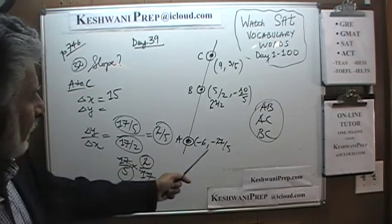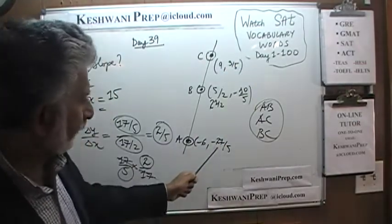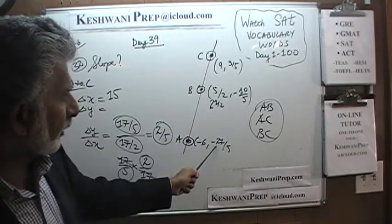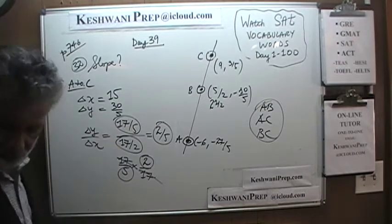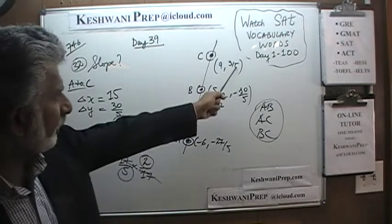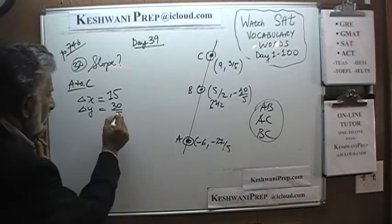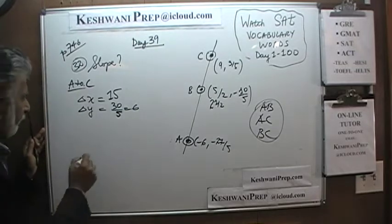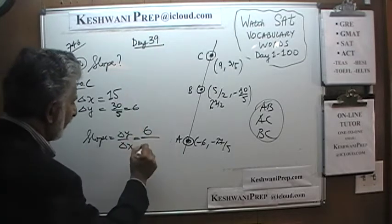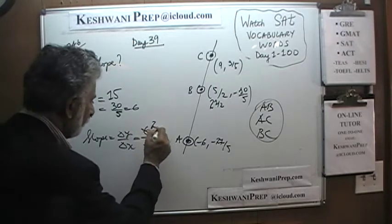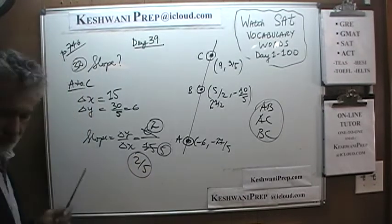What about change in Y, going from A to C? Forget the fifths for the time being — just look at negative 27 and 3. A journey from negative 27 to 3 is a journey of 30 units, but 30 fifths, because we have a fifth here and a fifth there. 30 fifths is just 6. Therefore the slope is simply change in Y over change in X: 6 over 15. Divide top and bottom by 3, and we end up with 2 over 5 — 2 fifths. Same as before.